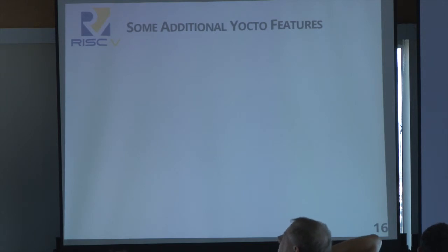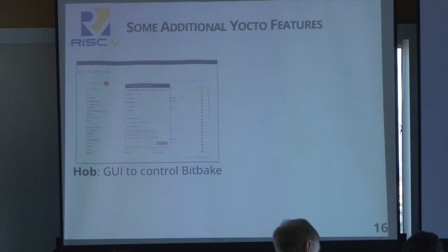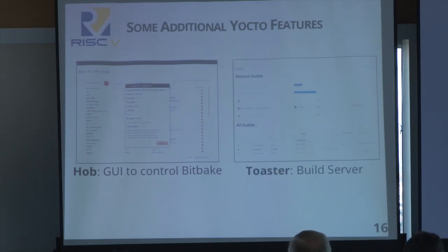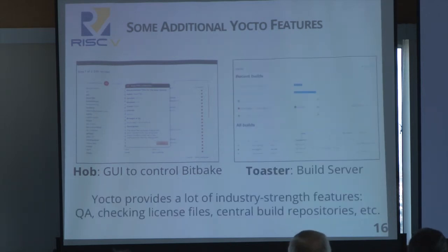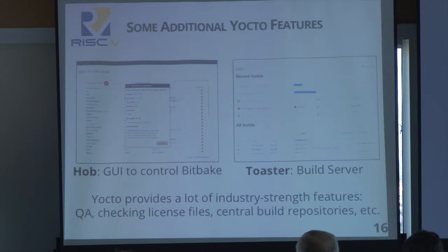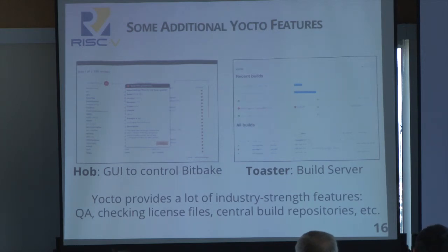Before concluding, I'd like to mention a couple more Yocto features. It has a GUI that allows you to control BitBake, making it very nice to browse through available packages. You can set up a build server for continuous integration. There are also industry-strength features like QA checks that verify binaries have the right sections, license file compliance checks, and a central build repository to share intermediate build results across your organization so not every machine has to rebuild everything.